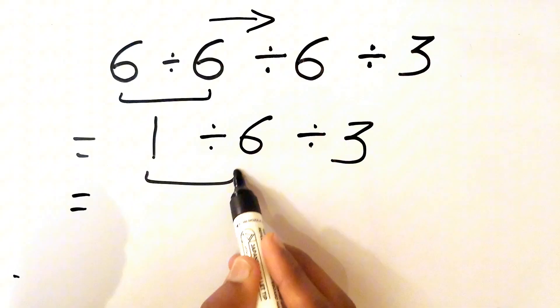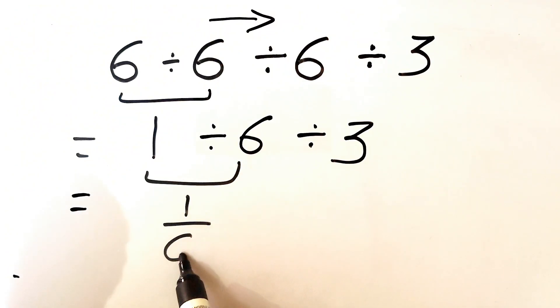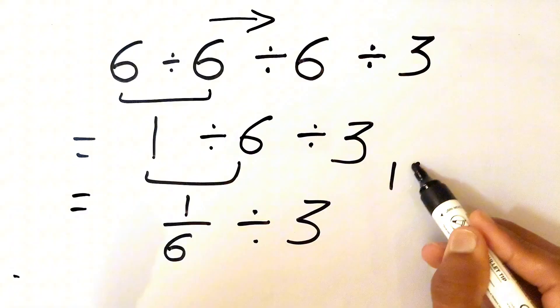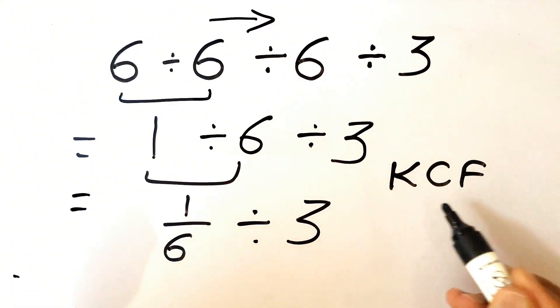Now 1 divided by 6 can also be written as 1 over 6, and we'll write this divided by 3 as it is. Now here comes the fun part. We need to follow one rule which is also called the KCF rule.